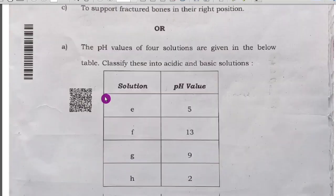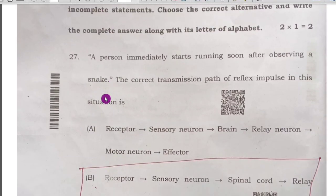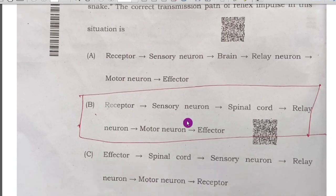Next now, biology. A person immediately starts running soon after observing a snake. The correct transmission path of reflexive impulses in this situation is receptor, sensory neuron and spinal cord, next relay neuron.